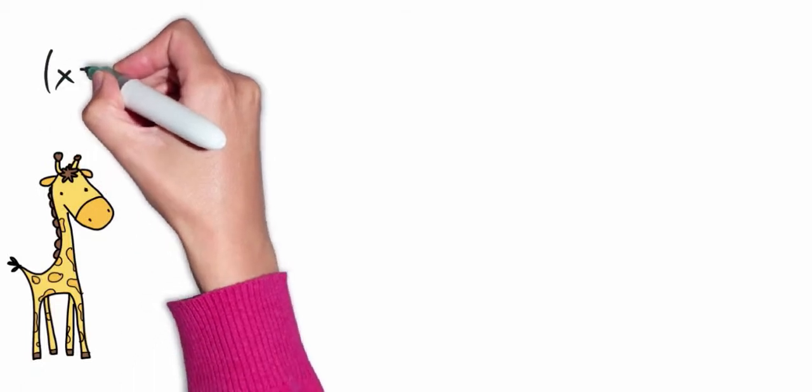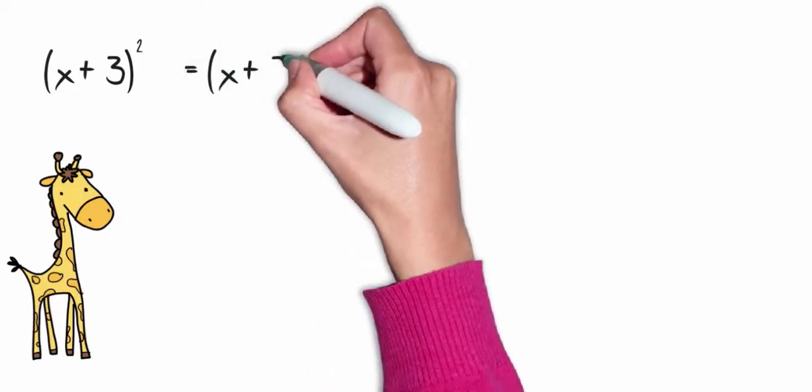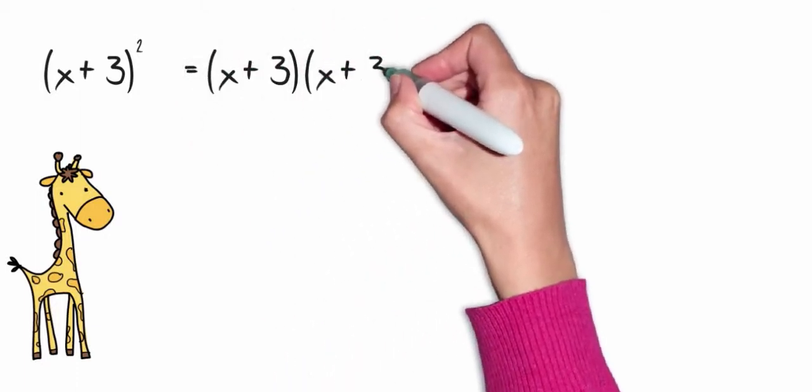Now let's look at an example using variables. x plus 3 quantity squared. First, I'm going to write that out as two binomials, which would be x plus 3 times x plus 3.